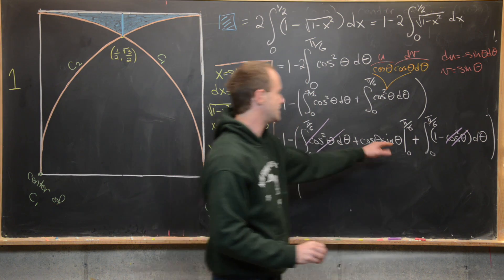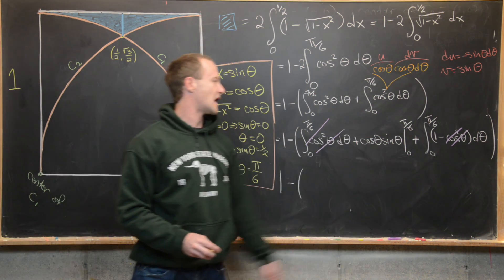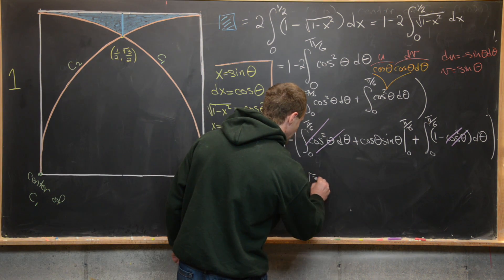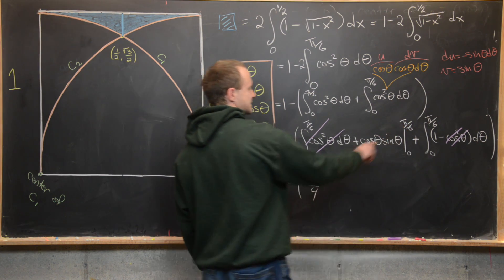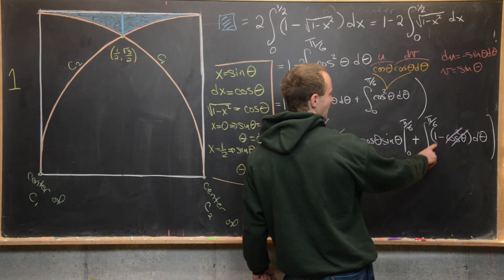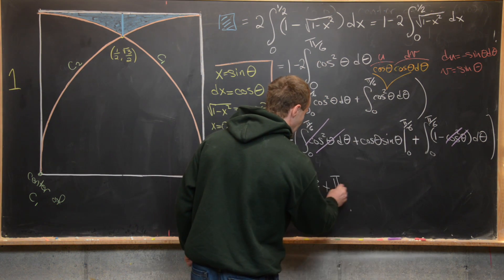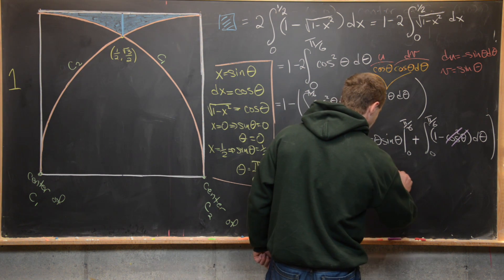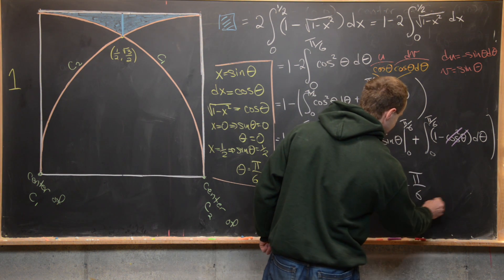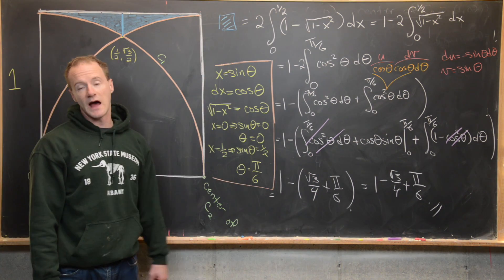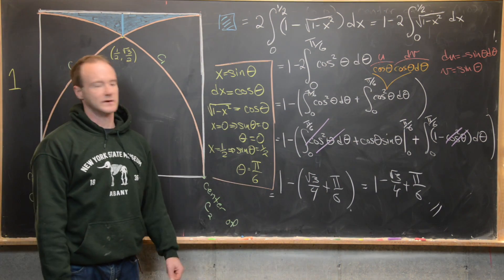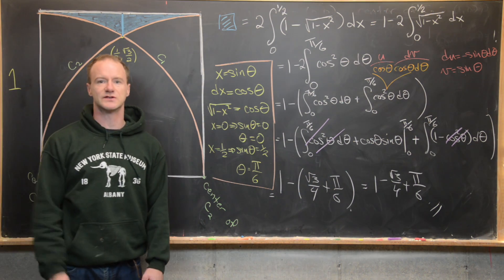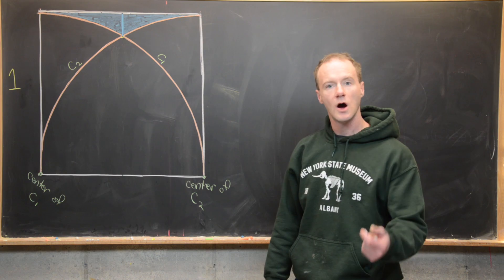Evaluating at the bounds: at θ = 0 the boundary term is zero; at θ = π/6, cos(π/6) = 1/2 and sin(π/6) = √3/2, giving √3/4. The integral of 1 from 0 to π/6 gives π/6. So the final area is 1 − √3/4 + π/6, which is the area of the blue region. Now let's get rid of the integration approach and do a simple geometric explanation.